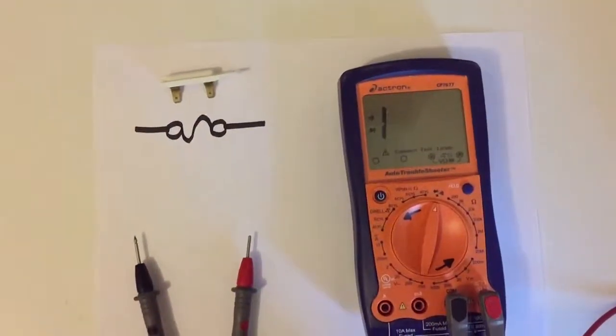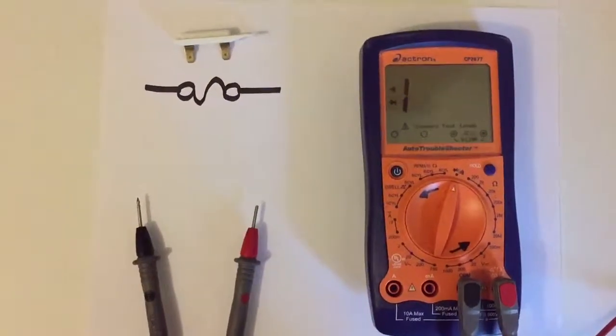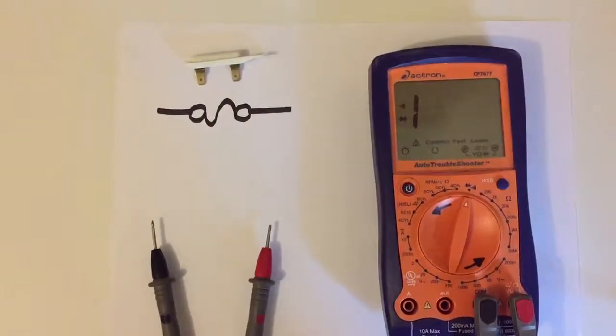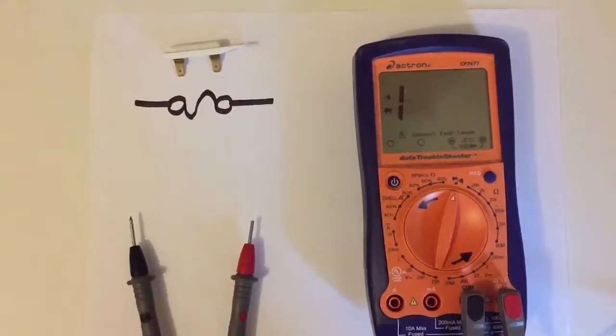Each fuse for each individual circuit, and they're meant to interrupt the circuit if there's an overload on the amperage. That's used to prevent further damage of other components or anything harmful.